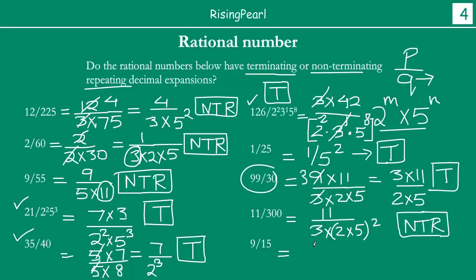For the last one, 9 by 15: write 9 as 3 times 3, and 15 as 3 times 5. The 3s cancel, leaving 3 by 5. Yes, this will be terminating. So friends, again, we saw that simply by looking at the fraction we can tell whether the decimal expansion will be terminating or non-terminating repeating.